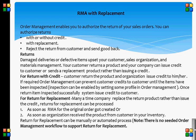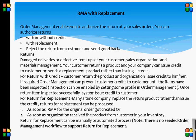For return for replacement, many times a company replaces the return product rather than issuing credit. Returns for replacement can be processed: first, as soon as the RMA for the original order gets created; or second, as soon as the organization receives the product from the customer into inventory. Return for replacement can be a manual or automated process. Note there is no seeded order management workflow to support return for replacement.